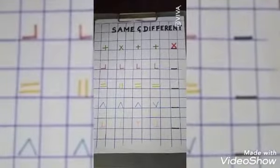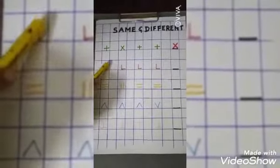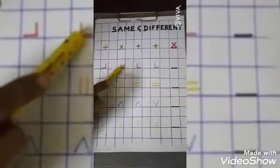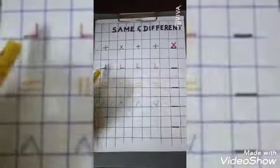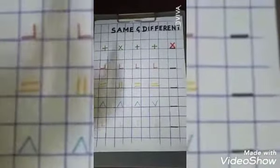Next, you see this. This is an inverted shape of L. This is an L shape. So, which is different here? This one is different.